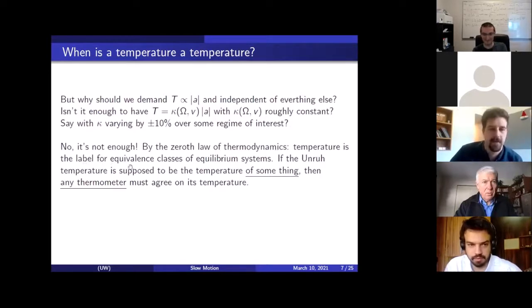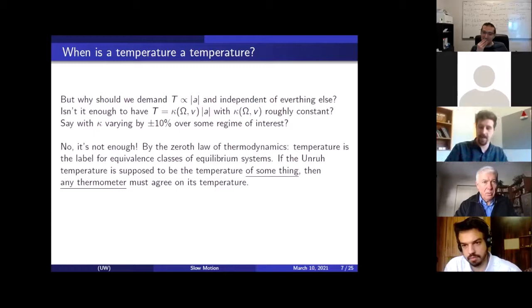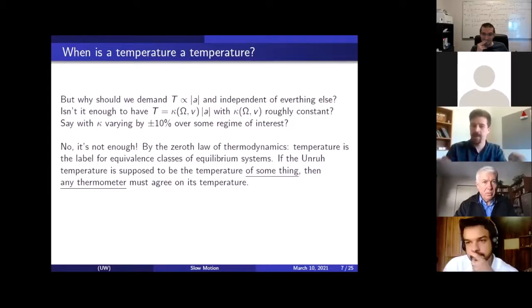But I want to push back on that, is it is not enough. And here's the reason, it's very basic thermodynamics, leading to this conclusion, is that by the zeroth law of thermodynamics, temperature is a label for equivalence classes of equilibrium systems. And what that means is that if the Unruh temperature is supposed to be the temperature of something, then any thermometer has to agree on that temperature measurement. Imagine it didn't. Imagine you had something of some temperature, and you put one thermometer in contact with it, and it says one Kelvin. And you put another thermometer in contact with it, and both these thermometers thermalize with the thing, but the second one reads off 1.1 Kelvin. These are bad thermometers, obviously, but the way to really make that concrete is to put those two thermometers, which are now both thermal with the system being measured, put them in contact with each other, and you would find heat flow between them.